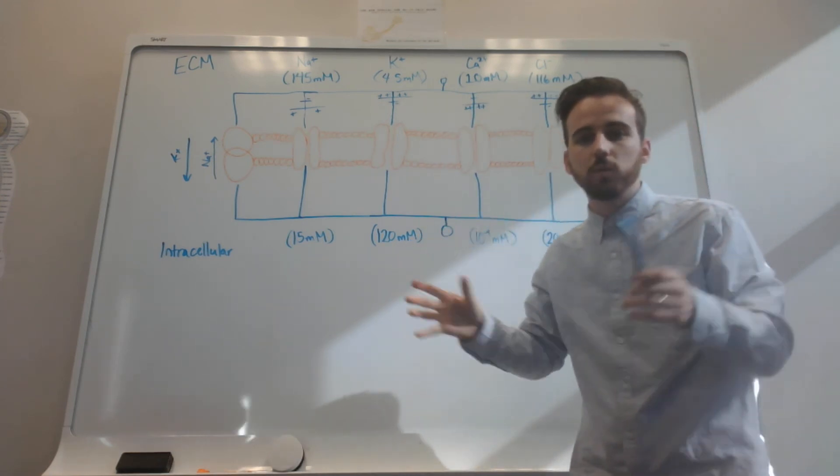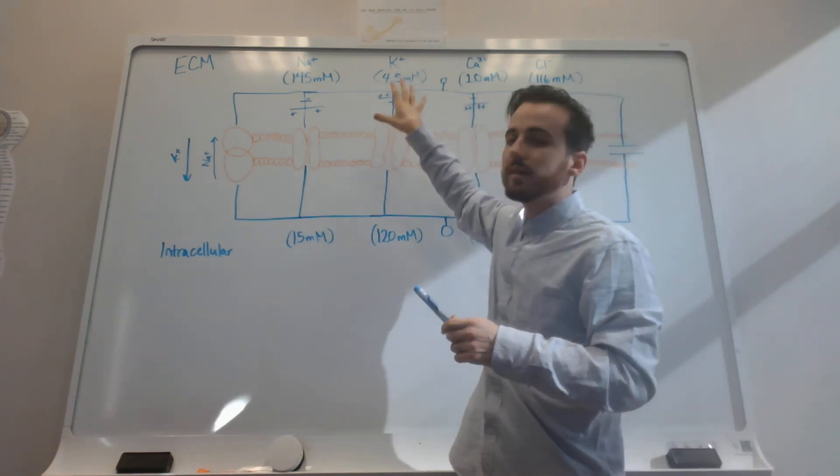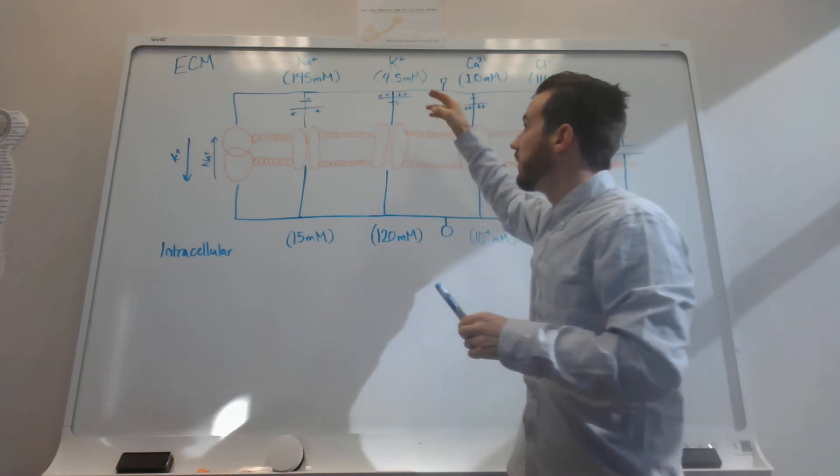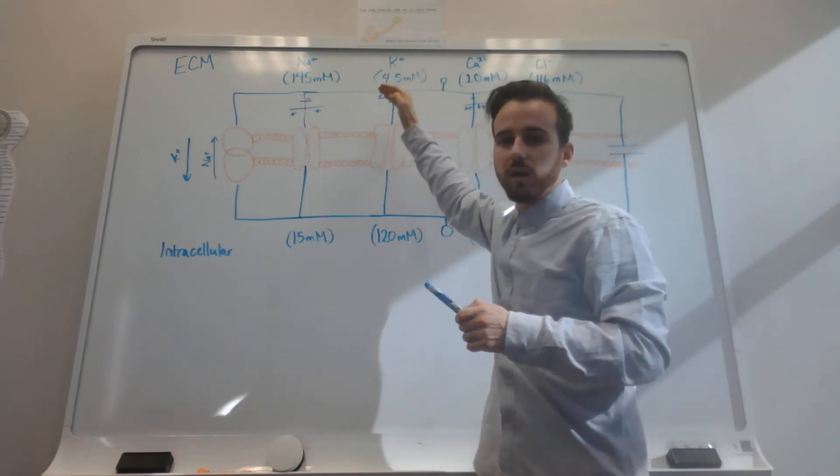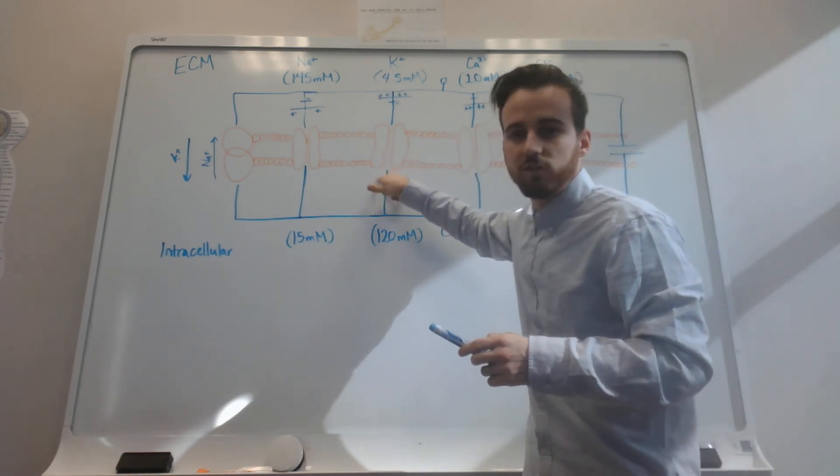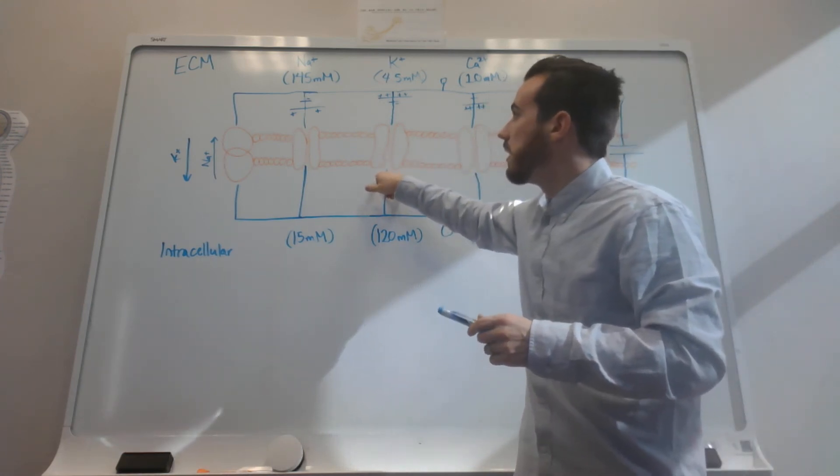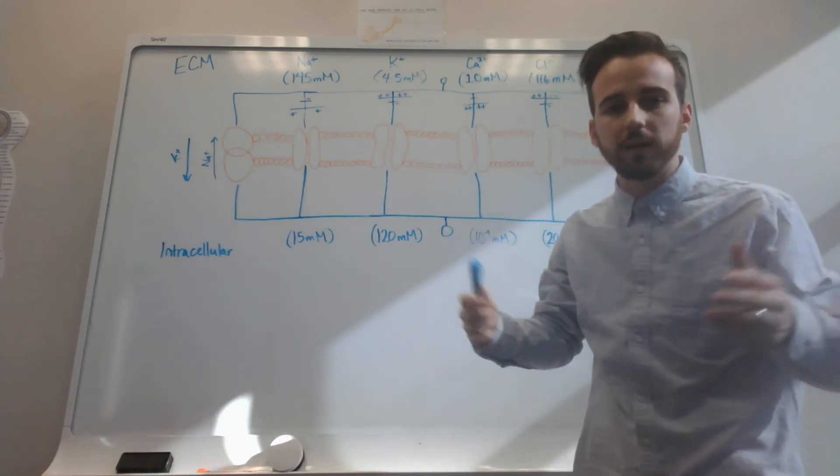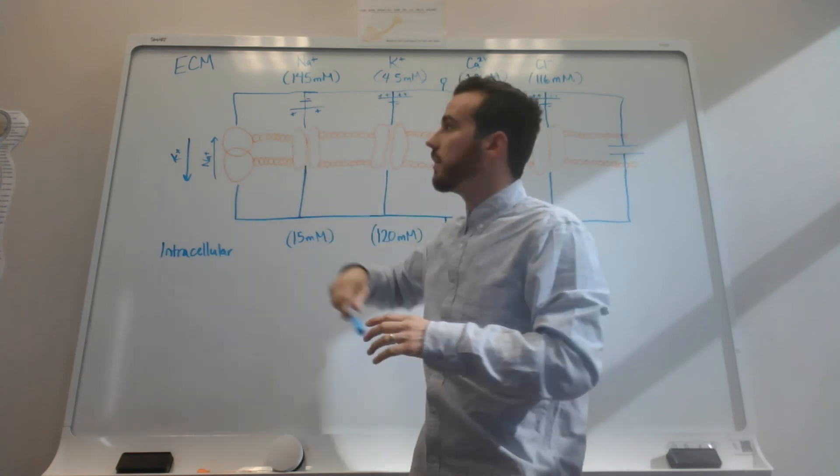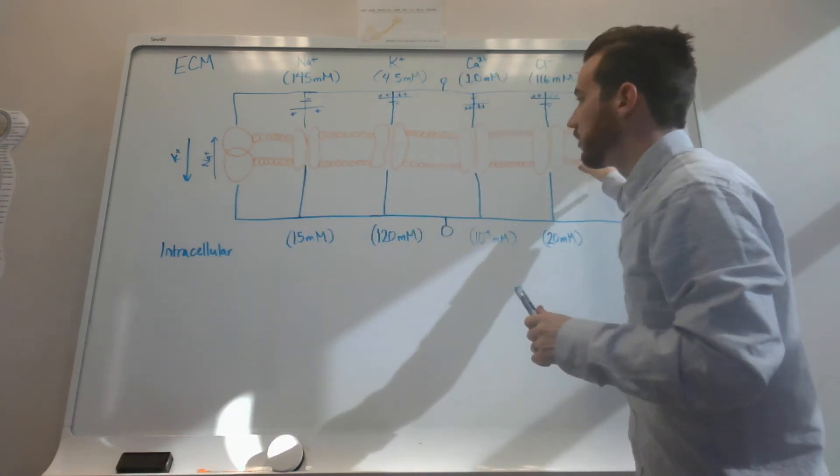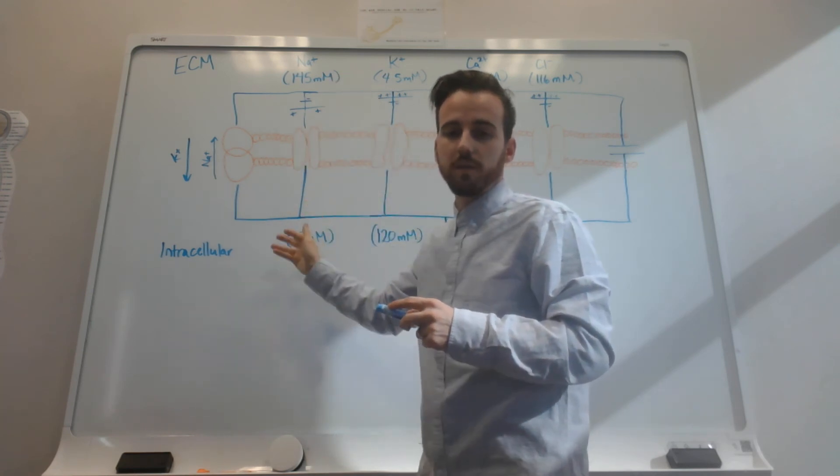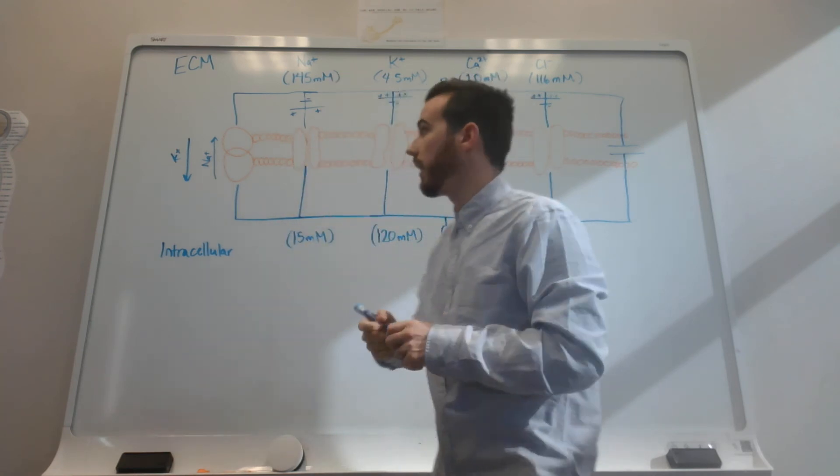So physiologically, what's most common is that you're going to have leaky potassium channels. That means that most of the charge that's generated is going to be due to this channel right here. If we were to theoretically have a cell that was most leaky to sodium, then most of the charge would actually be caused by the passage of those positive ions through. But that's typically not the case.